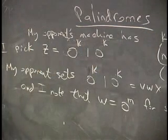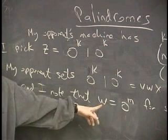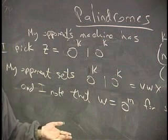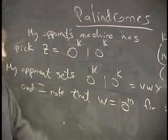No matter how you split it up into three parts, I know that the w part is going to be all zeros. And that's what I'm noting here. It's some number of zeros that's more than one and less than k.